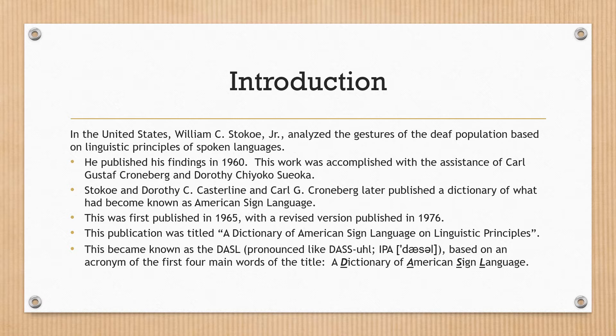This work was accomplished with the assistance of Carl Gustav Cronberg and Dorothy C. Casterline. Stokoe, Dorothy C. Casterline, and Carl G. Cronberg later published a dictionary of what had become known as American Sign Language. This was first published in 1965, with a revised version published in 1976.